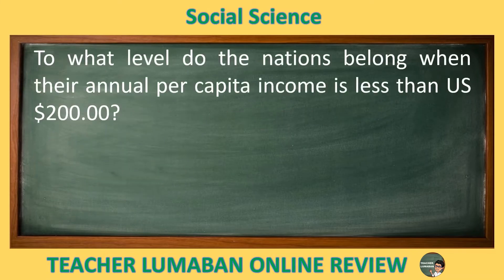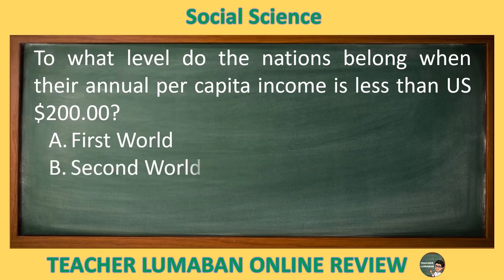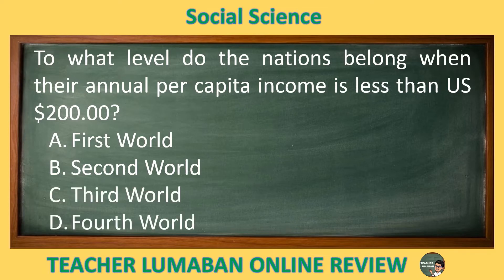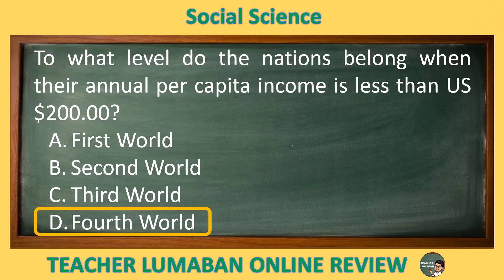To what level do the nations belong when their annual per capita income is less than US$200? Letter A: First World. Letter B: Second World. Letter C: Third World. Letter D: Fourth World. The correct answer is Letter D, Fourth World. The level of the nations that have an annual per capita income of less than US$200 is Fourth World.